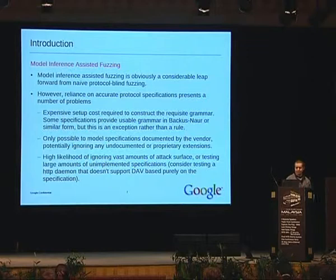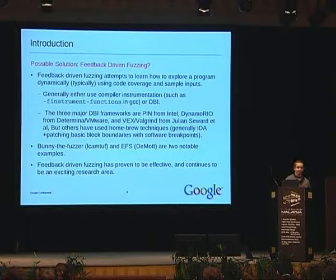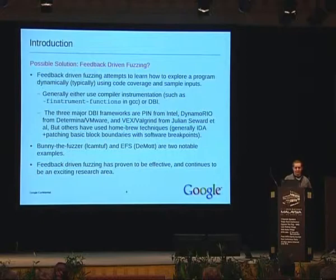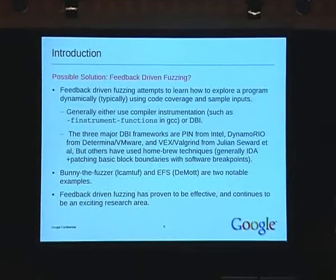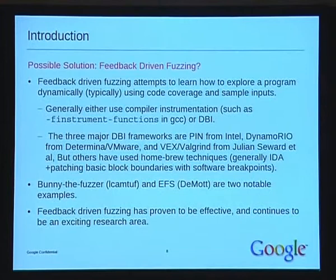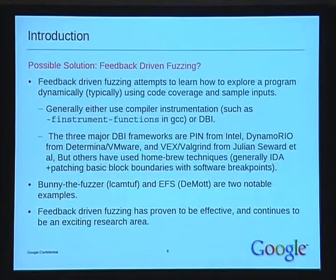A possible solution to this has been the introduction of feedback-driven fuzzing. Feedback-driven fuzzing attempts to monitor the application as you're fuzzing it and learn which parts of the code you're touching. This is really cool because you can see what kind of coverage you're getting and the fuzzer can make decisions about what code to touch. If it can see it's going down a particular path, it can try to continue down that path to reach some leaf node.